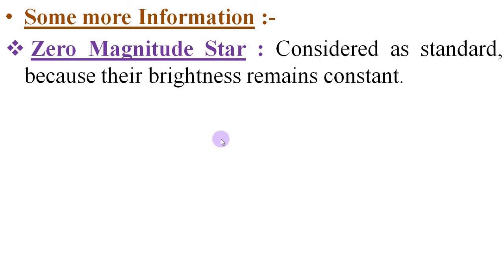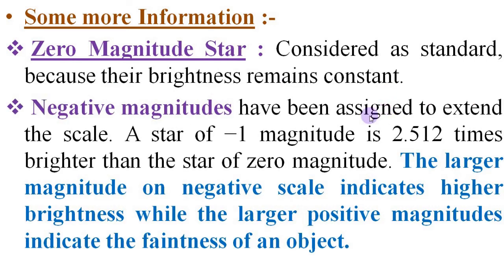Nowadays another classification is done which is the 0 magnitude star. This is considered as standard because their brightness remains constant. They are seen from the north pole near to the pole star. Even negative magnitudes have been assigned to extend the scale. A star of minus 1 magnitude is 2.512 times brighter than the star of 0 magnitude. So the larger the magnitude on the negative scale indicates higher brightness, while larger positive magnitudes indicate the faintness of an object.